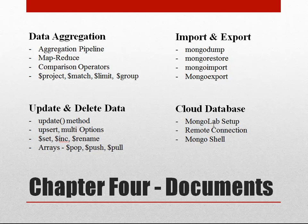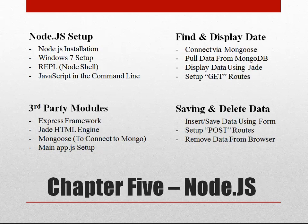We'll take a look at creating a cloud database using the MongoLab service, connect to it remotely through the shell, and then build a small Node.js application — Node.js being JavaScript on the server. It's okay if you don't know Node.js because we'll only be doing basic things. We'll make our application find and display data from our MongoLab cloud database, and install third-party modules like the Express framework, Jade HTML engine, and the Mongoose module to connect to MongoDB. We'll also be saving and deleting data through the Node application.